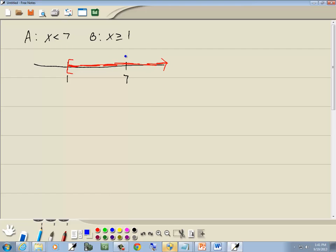This one, x is less than 7. This will be a parenthesis. There's no line underneath this. The only time you put a bracket is when there's a line underneath there. And it's a less than, so it's going to the left. There we go. Okay.